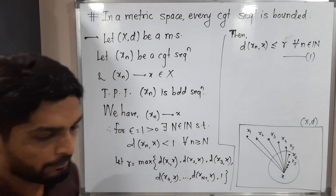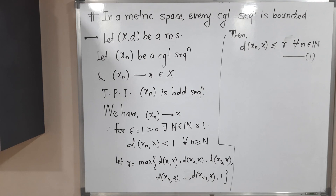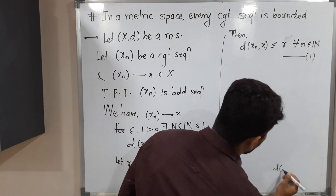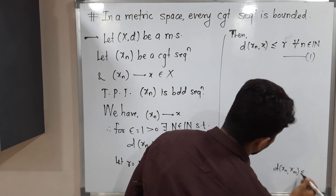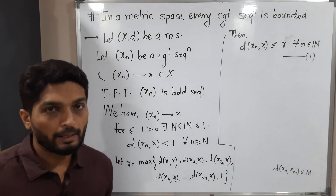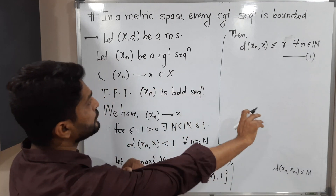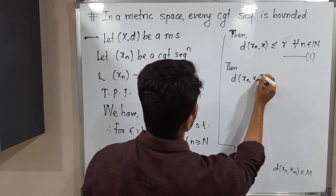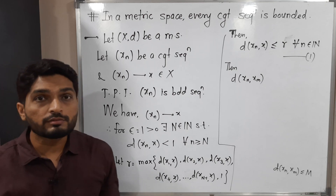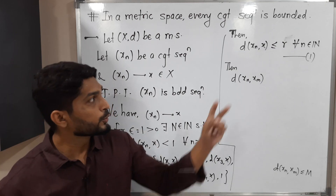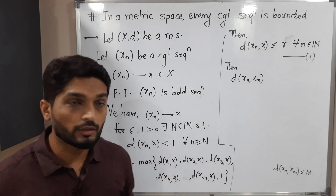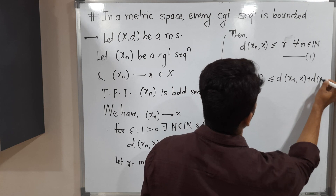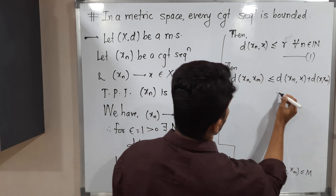Now let us focus on our target. We have to prove the sequence is bounded, meaning we must show d(xn, xm) is less than or equal to some M. I consider d(xn, xm) for any arbitrary n and m, and apply the triangle inequality using x as the third point: d(xn, xm) ≤ d(xn, x) + d(x, xm).